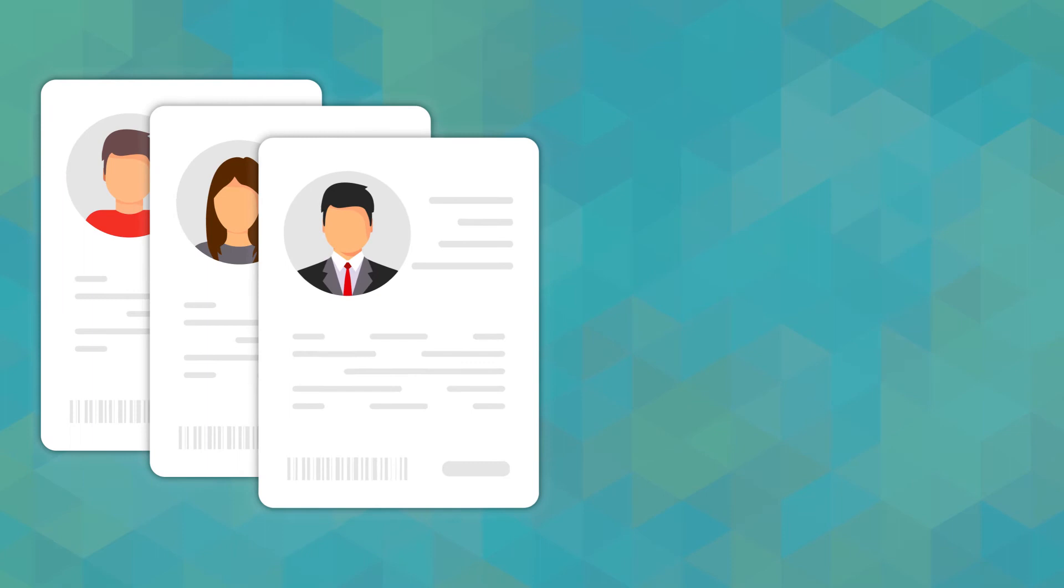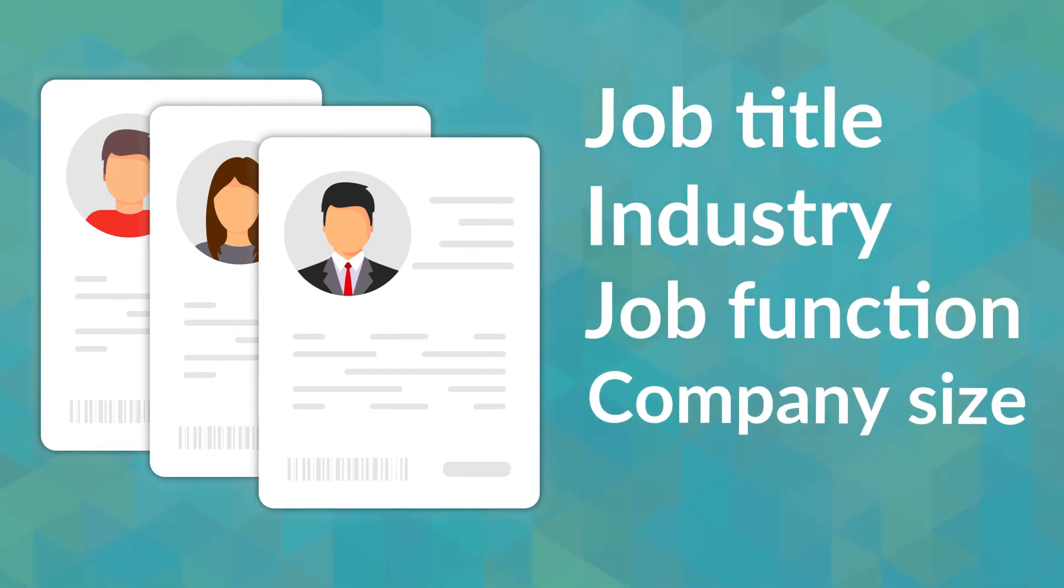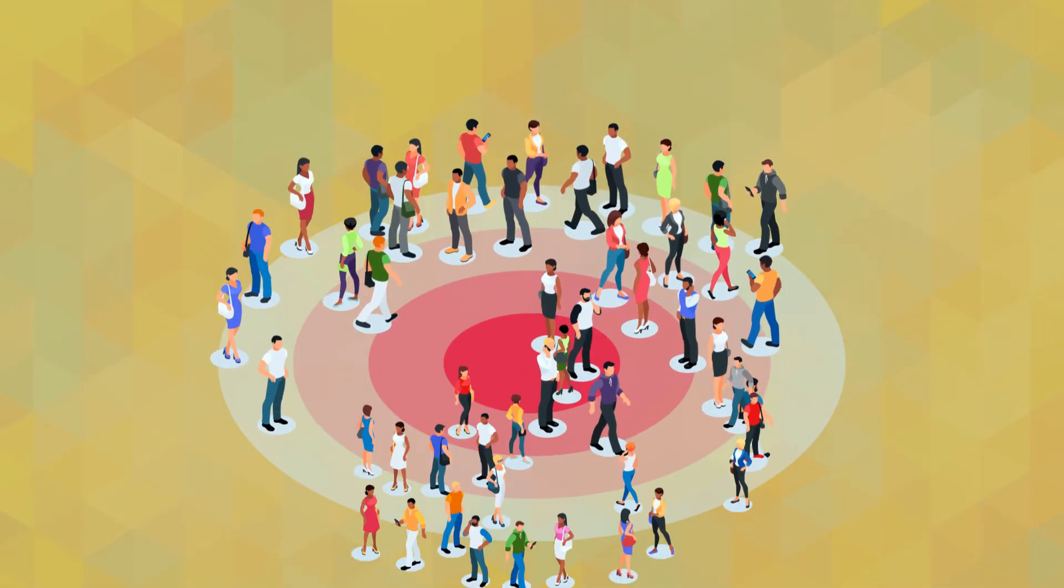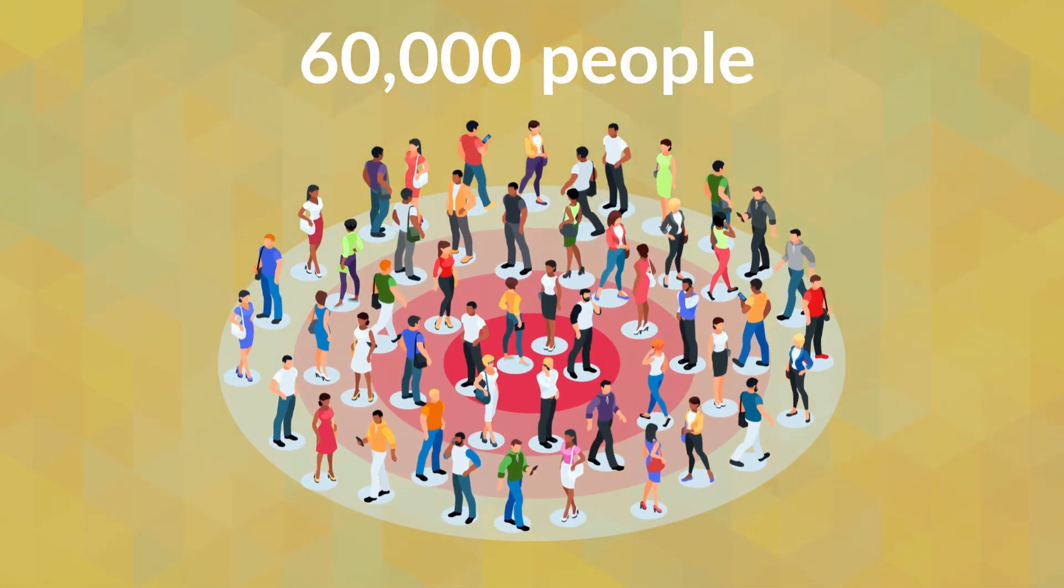To create your ideal persona, you need details such as their job title, industry, job function, company size, and interests. Most of the social media platforms have these options when it comes to targeting. You just need to select them. The average number of people you should have in your target audience on social media is about 60,000 people.